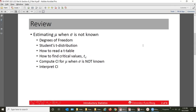So last time, or in this series for section 8.2, we are talking about estimating mu when sigma is not known. In other words, we don't know sigma, so what we do have for the standard deviation is S. And we discuss degrees of freedom, students' t-distribution, how to read a t-table, how to find critical values, and then we did an example where we computed the confidence interval for mu when sigma is not known, and we interpreted the confidence interval.